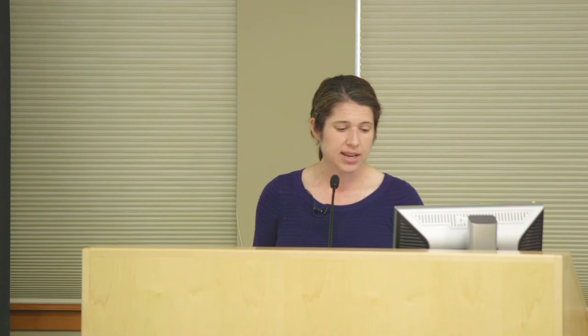This is what the adenoid looks like when you look straight back into a nostril — you see the back of the turbinate, the septum or middle wall, and about half the adenoid. A normal nostril would be mostly empty space, allowing for air passage. Kids with big adenoids can have 80-90% obstruction from that adenoid tissue. Another symptom people may not think of in relation to adenoids is cough — some kids have a chronic cough, worse at night, from drainage from the adenoid and nose area.